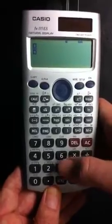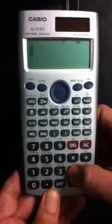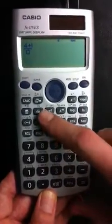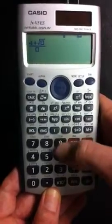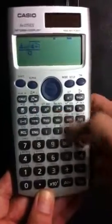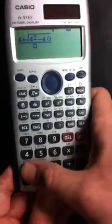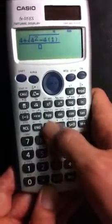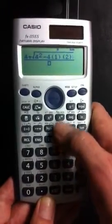You might use the quadratic formula, for example, and have something like 4 plus, and then it has a square root button, so you could do square root of 4 squared minus 4 parentheses 1 parentheses 2. So that's the numerator of something you might get with the quadratic formula.